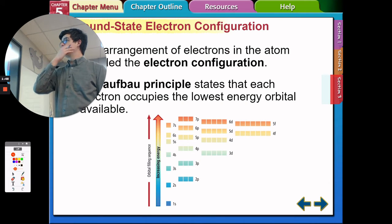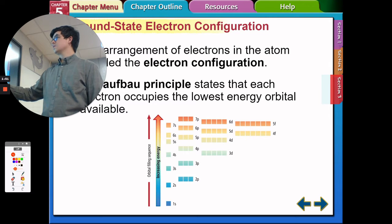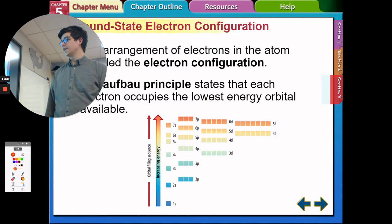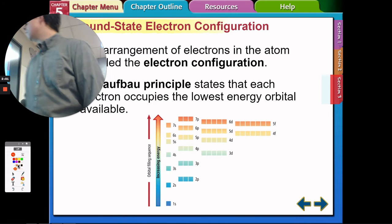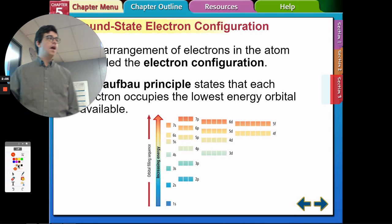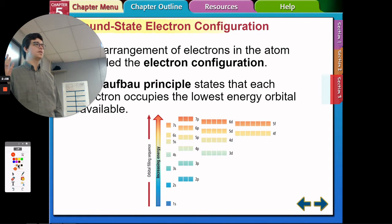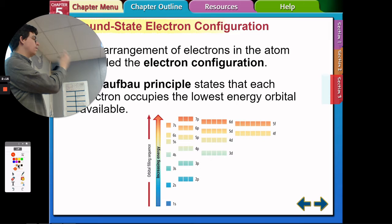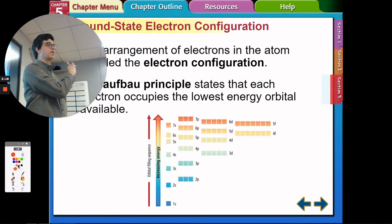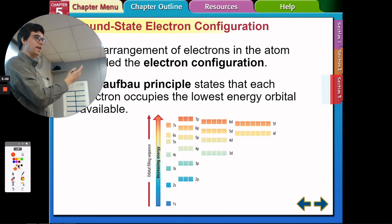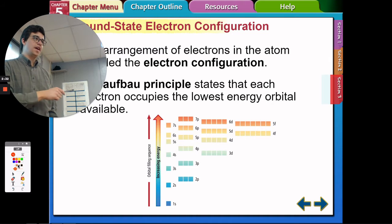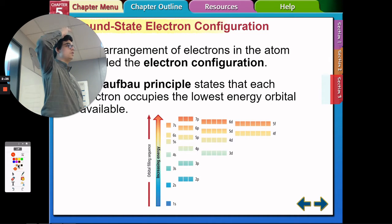For electron configuration, remembering those shapes, we use what's called an Aufbau diagram, coupled with three principles, to tell the electron configuration of any element. Each atom — as we go from one atom to the next — the atomic number increases by one. So hydrogen has atomic number one, helium has two, lithium has three, beryllium, boron, and so on.